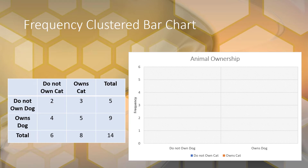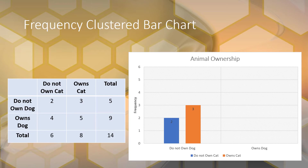From the contingency table, two people do not own a dog and do not own a cat, so that's the first bar — lighter orange under the 'do not own a dog' group. Then three people own a cat but do not own a dog, so that's the darker orange bar right next to it, representing 'do not own a dog but owns a cat.'